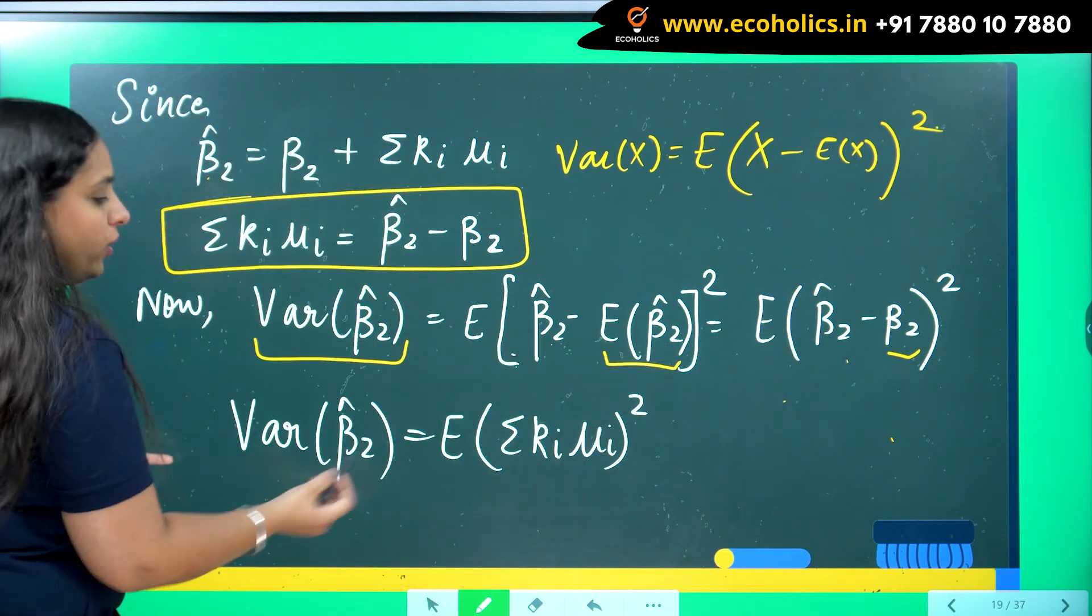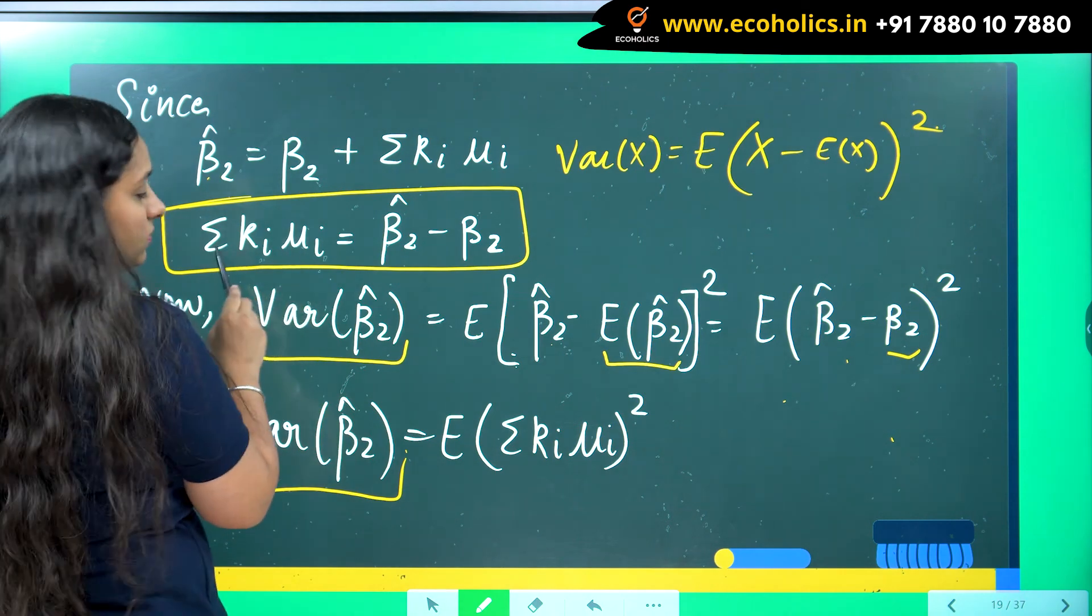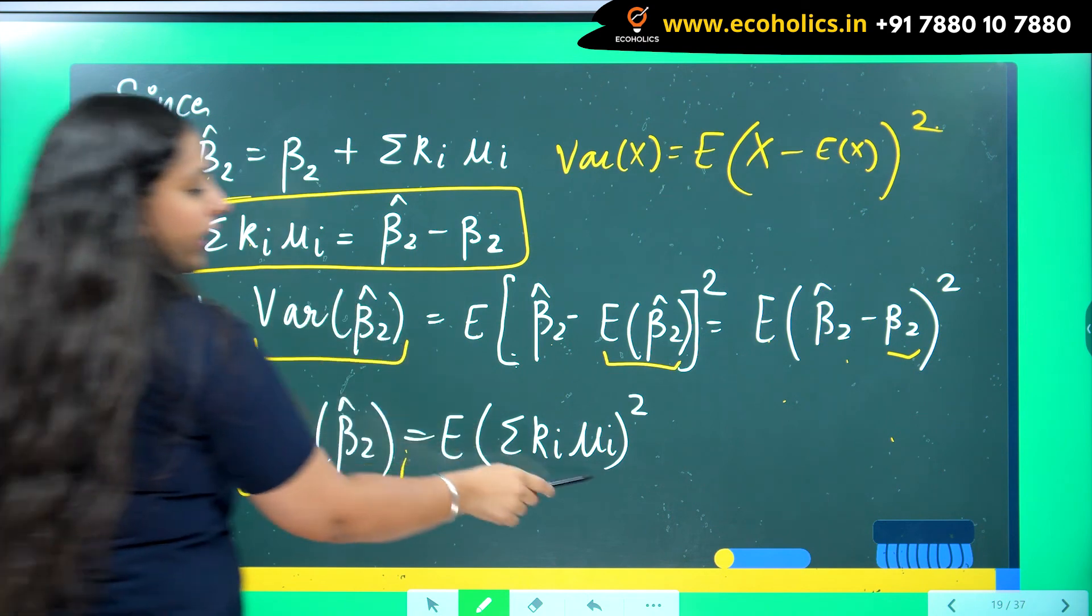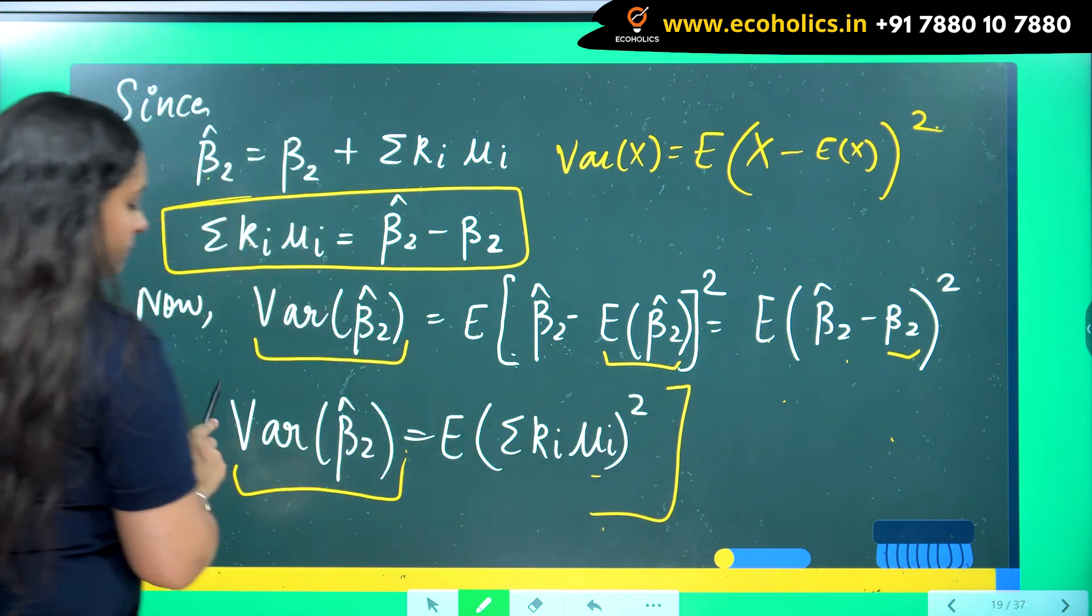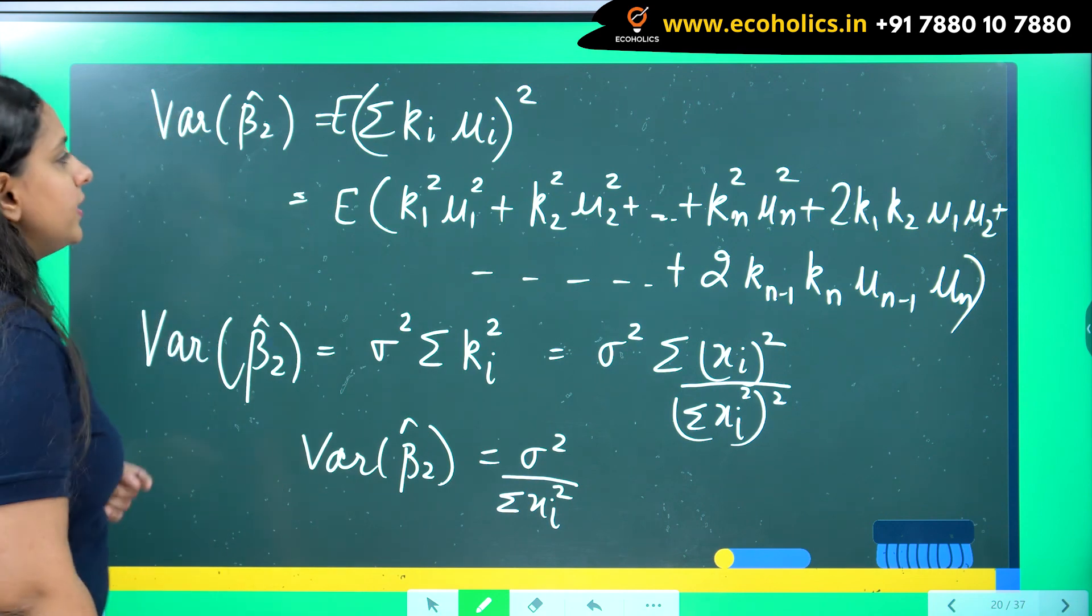So I will pick this value of beta 2 hat minus beta 2 from the equation given here. So substituting the value I will get variance of beta 2 hat equals to expectation of summation k i mu i whole square. Okay, let's take it forward. Let's see how to solve it now.